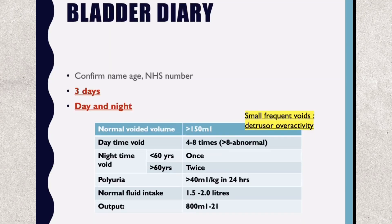Bladder diary — how to interpret a bladder diary. You always have to check the name, age, and NHS number. It is ideally advised for at least three days, and both day and night should be included.